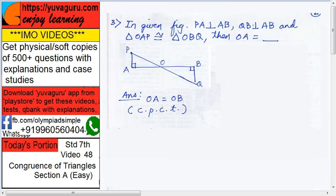When congruence is already given, what you have to do is find the corresponding sides or corresponding angles and write them as congruent. So, OA equals OB — that is by CPCT, corresponding parts of congruent triangles.